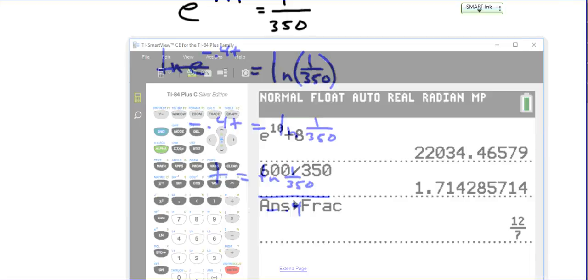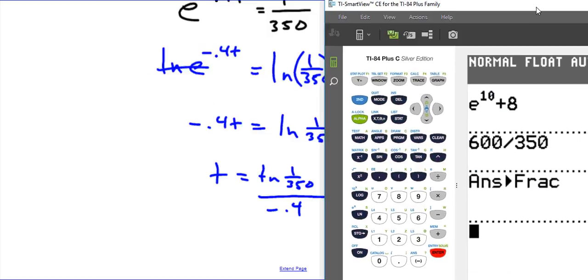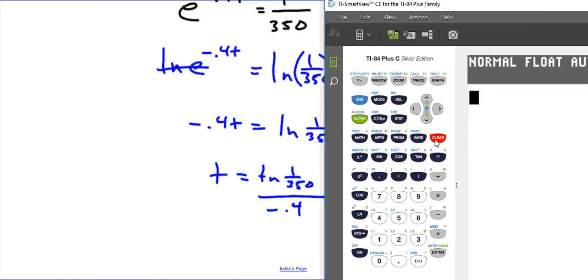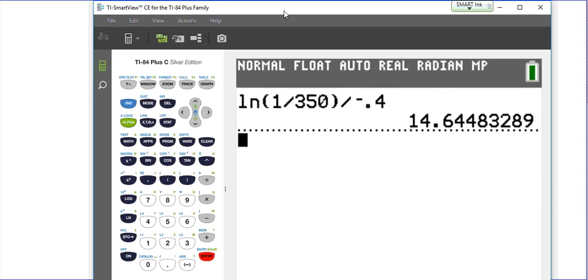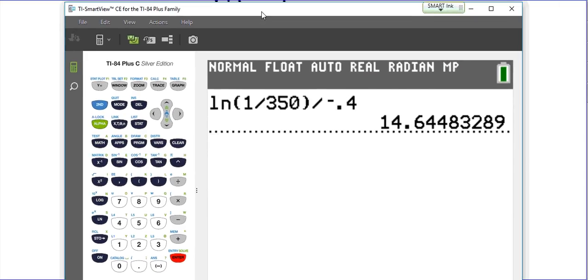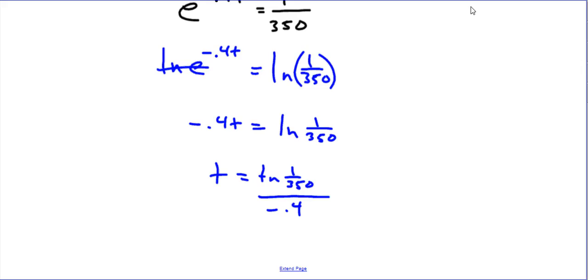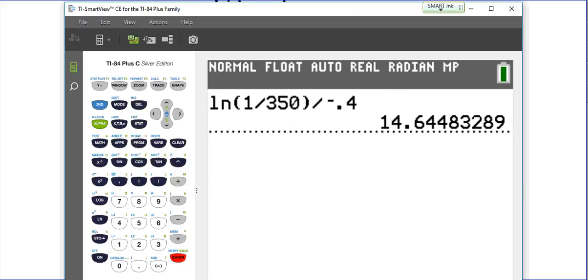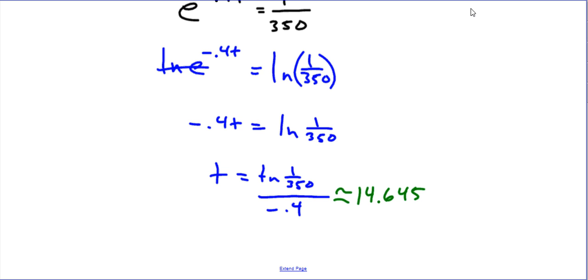To find the decimal answer, go on your calculator. You can go natural log of 1 divided by 350, close parentheses, and divide it by negative 0.4, enter, and you should have 14.645. 14.645, and there's how we do it.